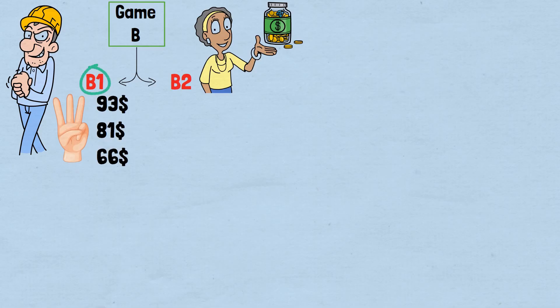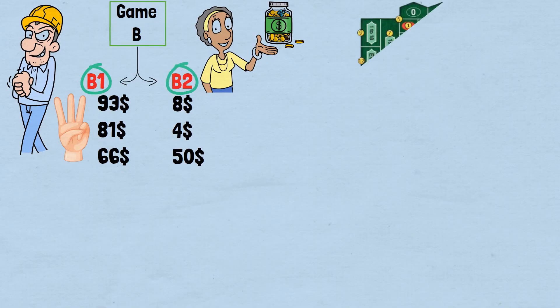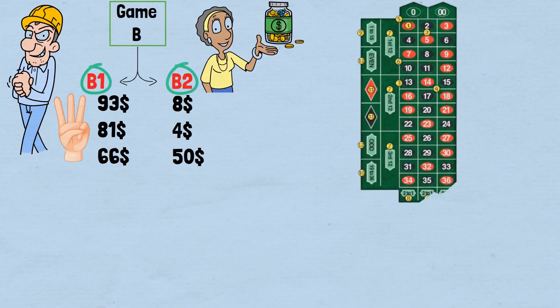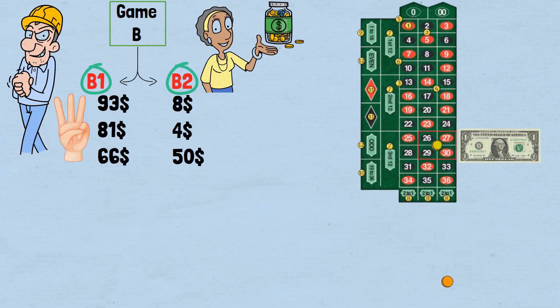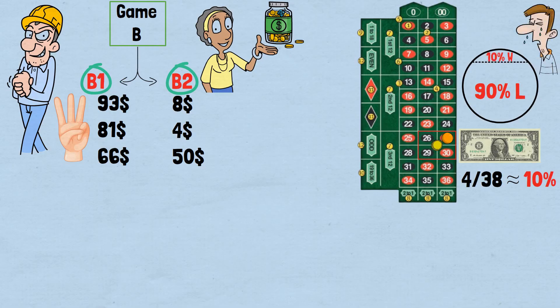When you're forced to play B1, you can only make what's called a corner bet. This means choosing an intersection of four numbers on the roulette layout—say 26, 27, 29, and 30. You win $1 if the ball lands on any of those four numbers. Your odds of winning B1 are therefore 4 out of 38, which equals roughly 10%. This means you'll lose 90% of the time when playing B1. It's an absolutely terrible game from the player's perspective, designed to drain your money rapidly.